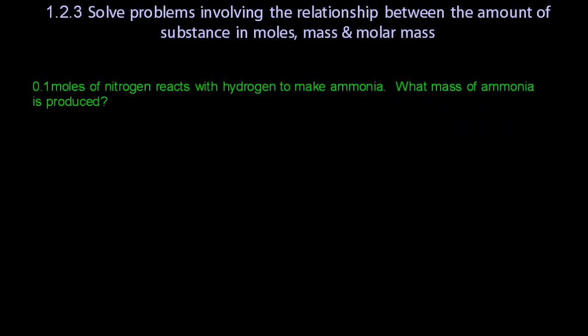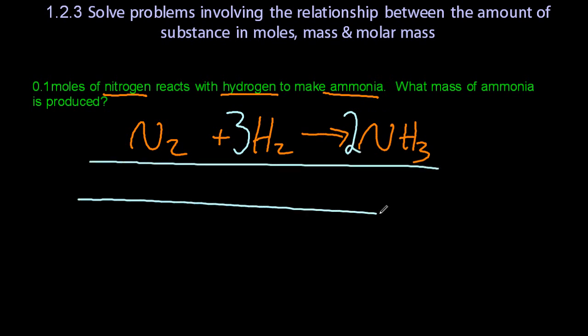Let's try another one. All right, so this is the Haber process, which you'll learn more about in the equilibrium section. Nitrogen and hydrogen are both diatomic, so N2 and H2, and ammonia is NH3. Now that's not balanced, so it's a 1, a 3, and a 2. So 1 mole of nitrogen reacts with 3 moles of hydrogen to make 2 moles of ammonia.